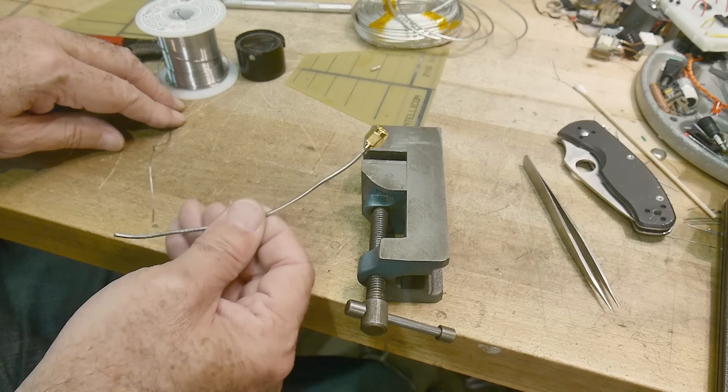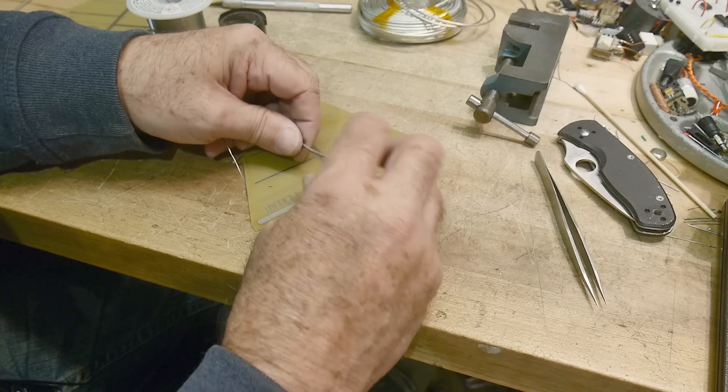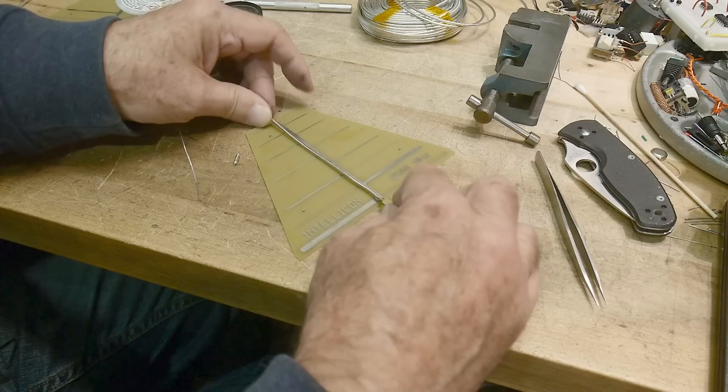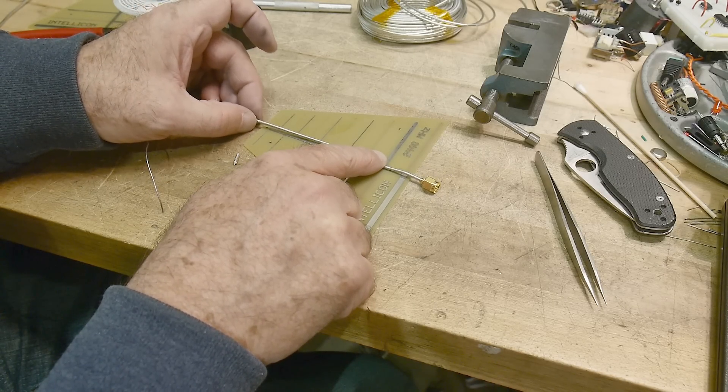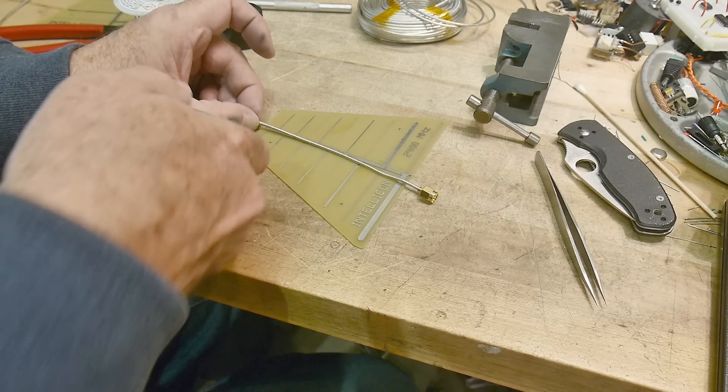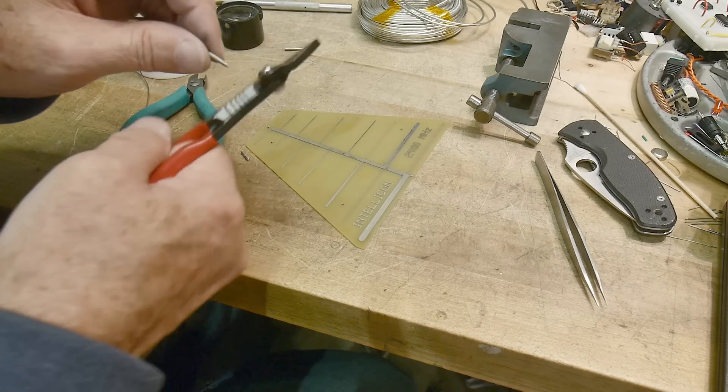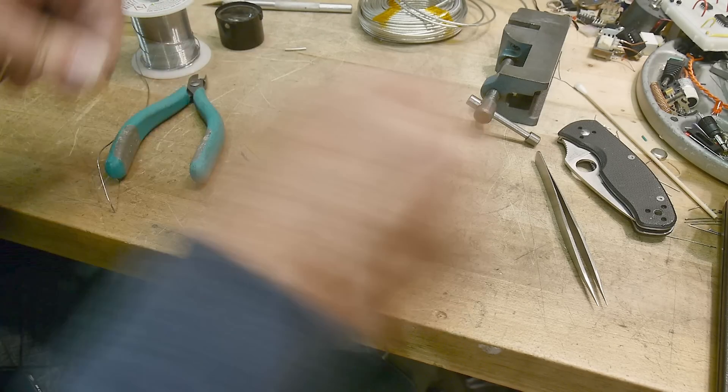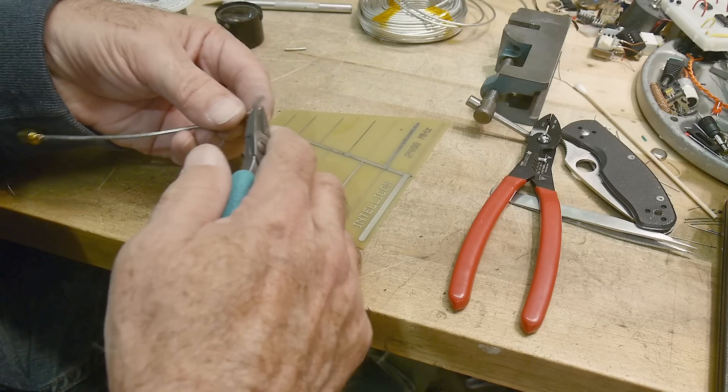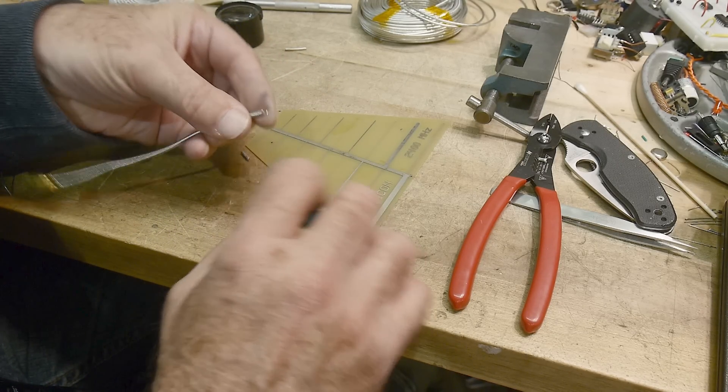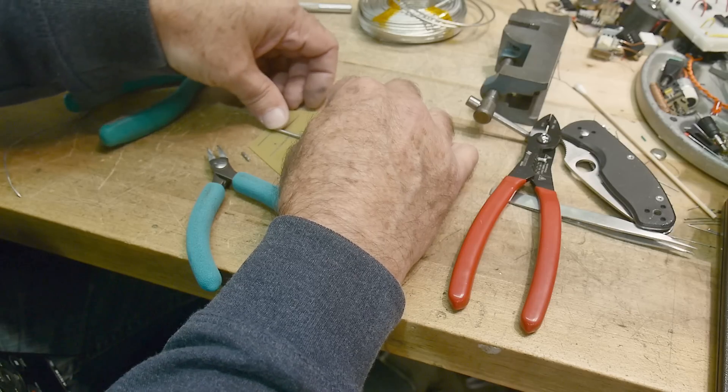All right. So now we have an SMA connector on the end of a piece of semi-rigid and then we will straighten it out and have it about over here. I think that will be a good length. Strip this one back. Bend that over. My favorite homemade pliers. Put it in the via. We'll be good to go.